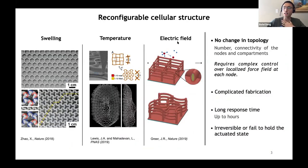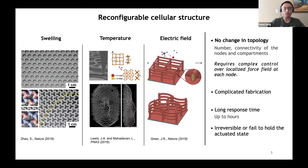Therefore, in attempts to build structures with tunable properties, people have started to investigate reconfigurable cellular structures, because shape-changing means property-changing. External stimuli such as swelling, temperature, and electric field have been used to activate the underlying material and thereby change the shape of the cellular structure. However, it is very hard, if not impossible, for those kinds of global fields to change the fundamental properties of the lattice.